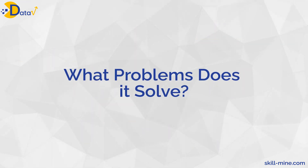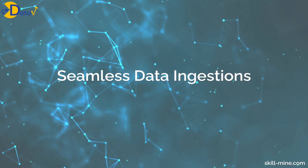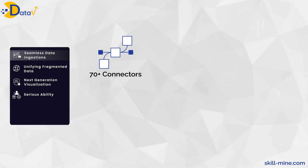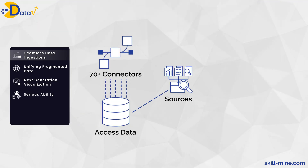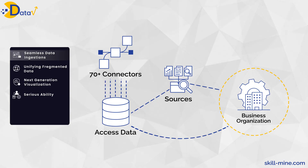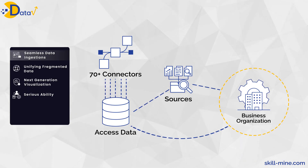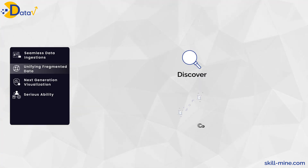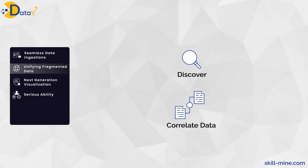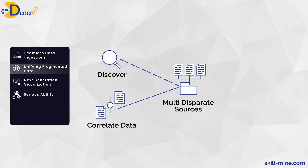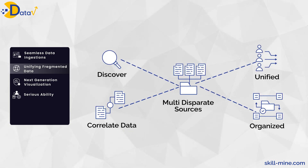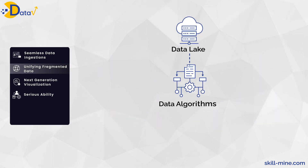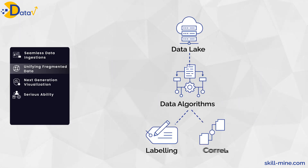What problems does it solve? Seamless data ingestion — more than 70 connectors to access data from any source across and outside your business organization. Unifying fragmented data: discover and correlate data points from multi-disparate sources into a unified, organized, and easy-to-decipher data lake using ML-driven data algorithms for labeling and correlation.